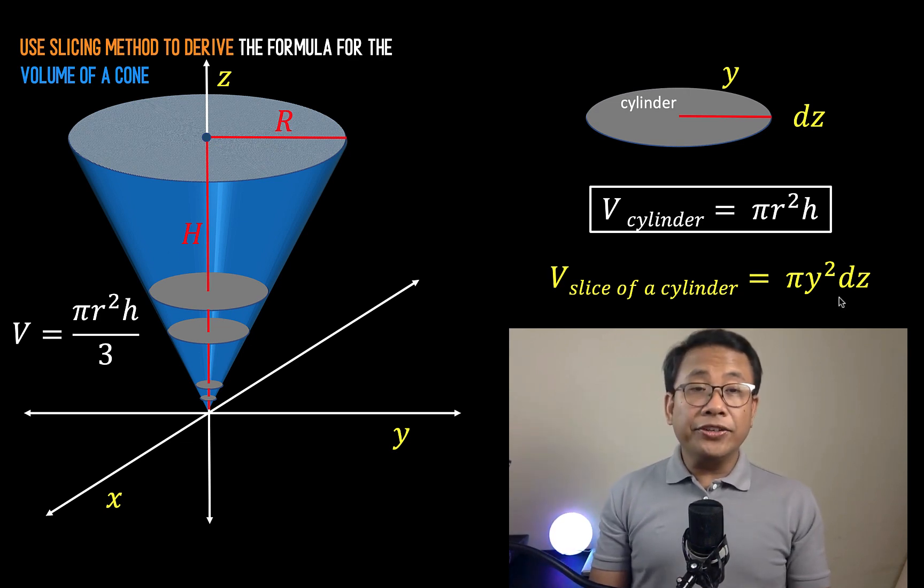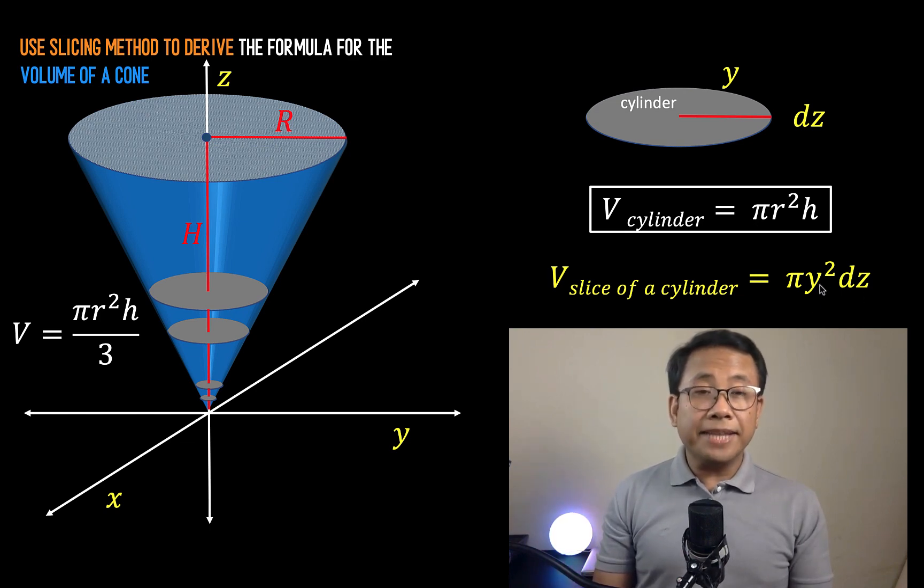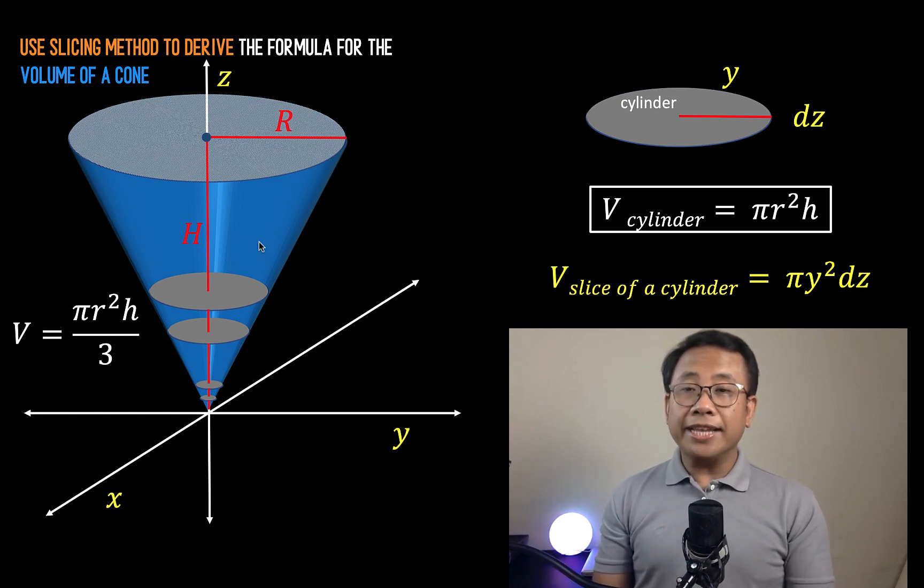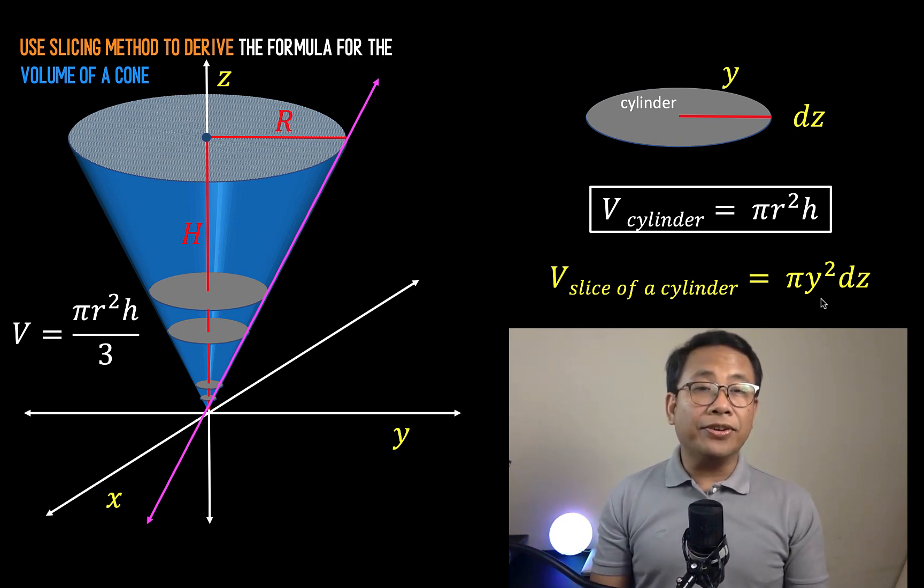Now, our problem here is there are two variables. We have the variable y and we have the variable z. So let's represent this y in terms of z. Now, going back to our cone here, notice that if I draw this line, then that line can represent the distance from the z-axis going to the line. And if you know the equation of this line, then we'll be able to have a representation for this radius.